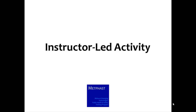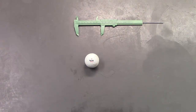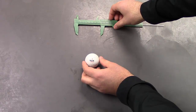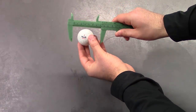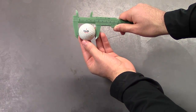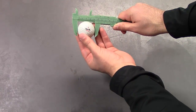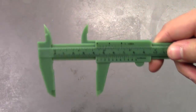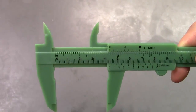The first part of the Orders of Magnitude activity is an instructor-led activity to help students understand what an order of magnitude is. The first step in the instructor-led activity is to measure the diameter of a small object like a golf ball. Here, we use vernier calipers to measure a golf ball's diameter. If you don't know how to use vernier calipers, you can view one of many YouTube videos that will show you.